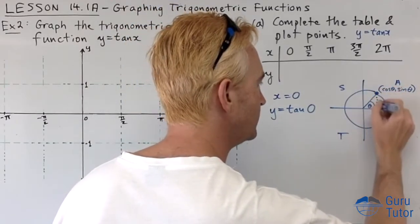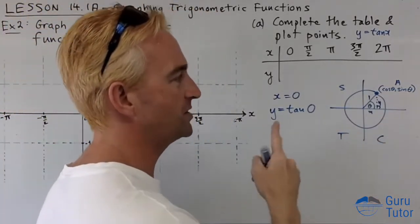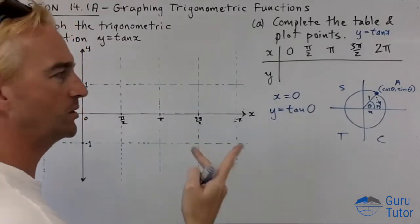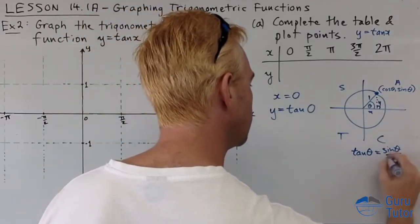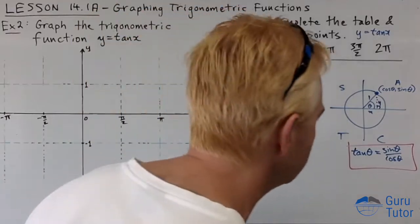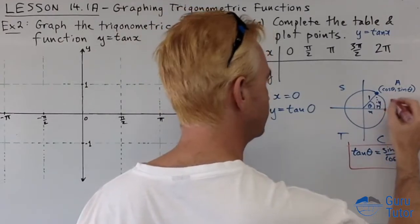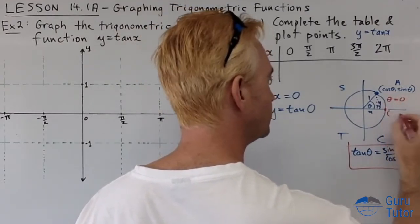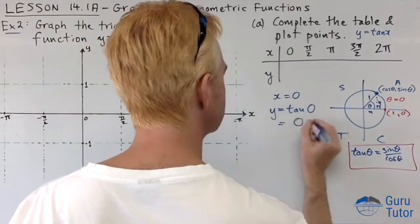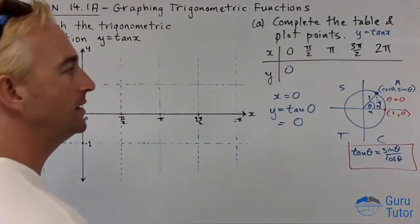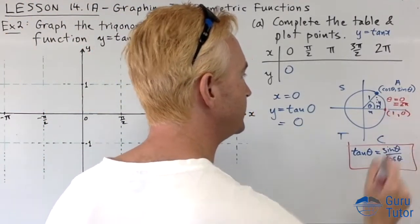Since the hypotenuse is one, sin θ = y and cos θ = x. So tan θ = sin θ / cos θ = y/x. For tan(0), the coordinates are (1, 0), so y/x = 0/1 = 0. Note that 0 and 2π are the same angle, so tan(2π) = 0 as well.